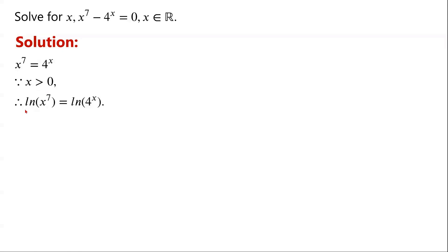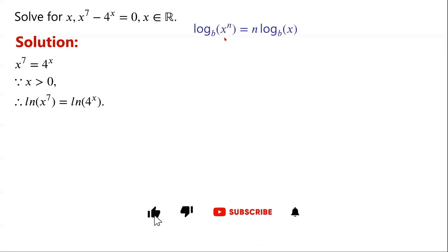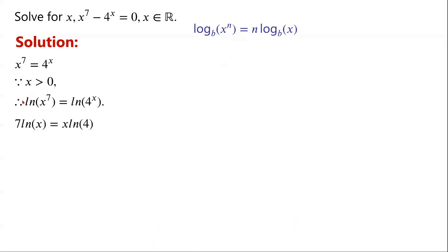Since x must be greater than 0, we can take ln on both sides of the equation. Using the rule that log base b of x to the power of n equals n times log base b of x, the left-hand side can be written as 7 ln x, and the right-hand side can be written as x ln 4.